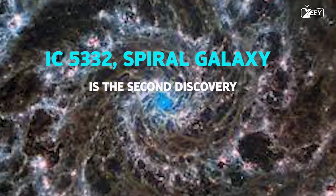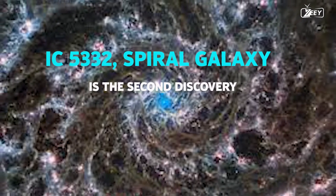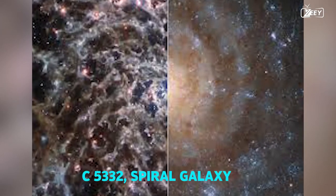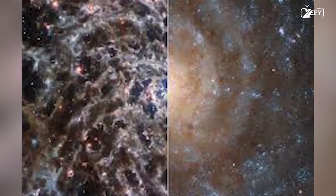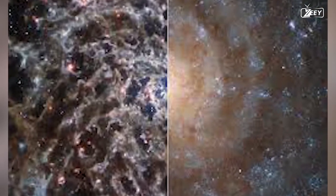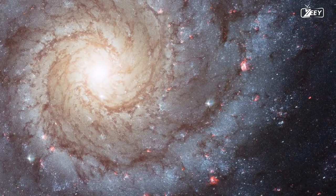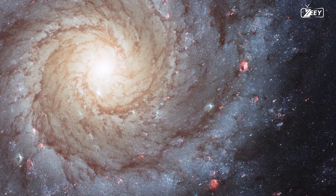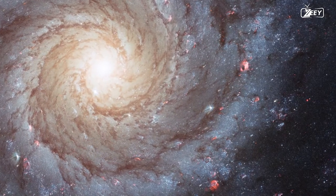IC 5332 Spiral Galaxy is the second discovery. This is the Spiral Galaxy IC 5332. The views on the left and right are from the Hubble and James Webb Space Telescopes, respectively. The photographs, especially when their data are combined, demonstrate the potent capabilities offered by both of the world's best space telescopes.